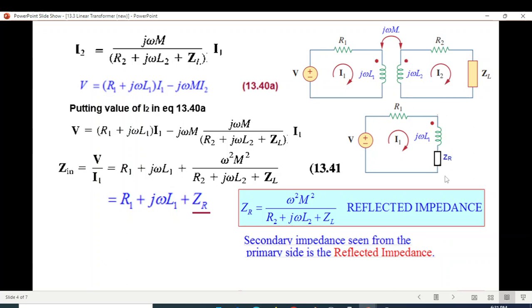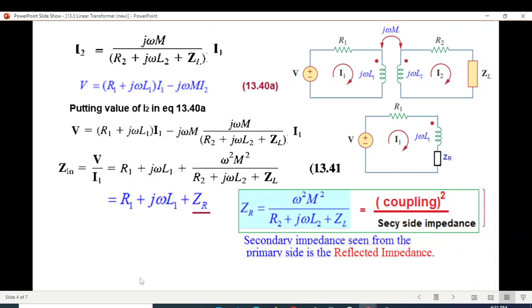Secondary impedance seen from the primary side is called the reflected impedance. In the equivalent circuit: primary resistance, primary coil value, and ZR secondary. The ZR value is very easy to memorize. Actually coupling square, coupling j omega M, so omega M square divided by total impedance on the right hand side. So R2 plus j omega L2 plus ZL. So easily you can memorize it.